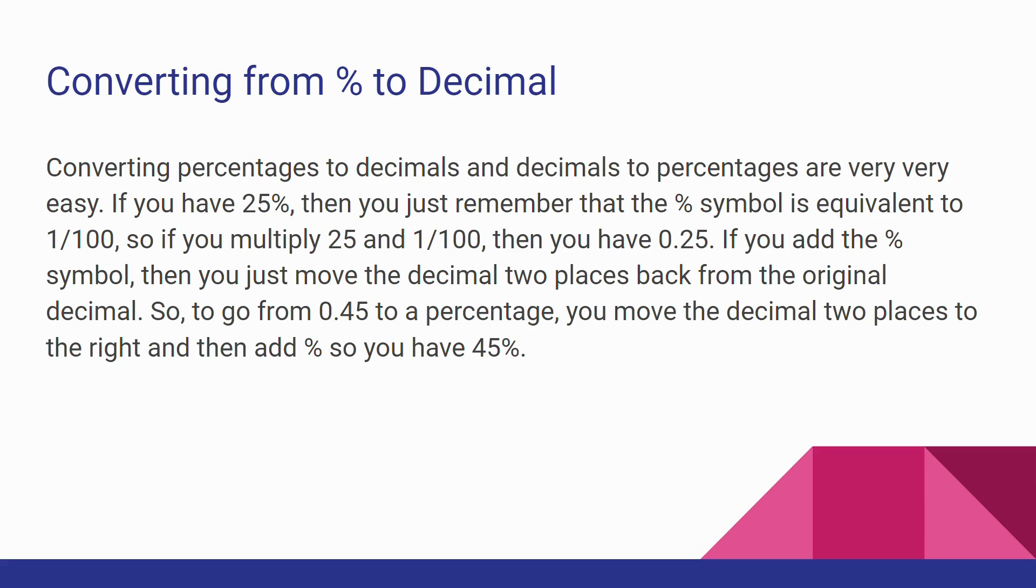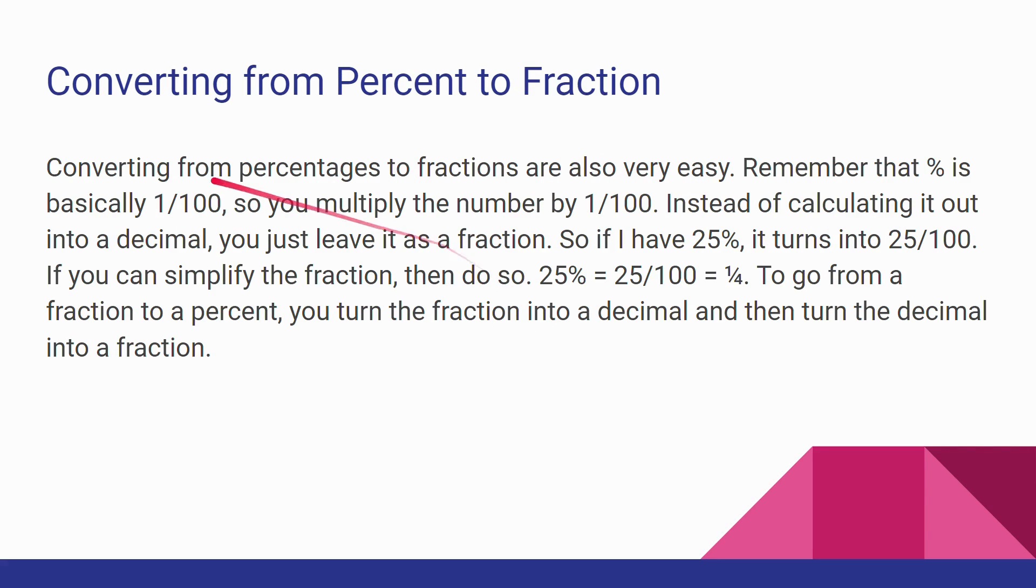If you add the percent symbol to a decimal, then you just move the decimal in the number two places to the right from the original decimal. So, say you go from 0.45 to a percentage, then you move the decimal two places to the right and add the percentage symbol, so now you have 45%.